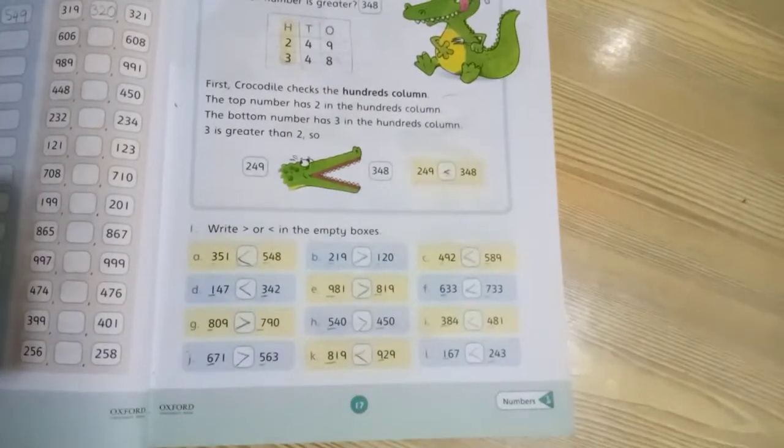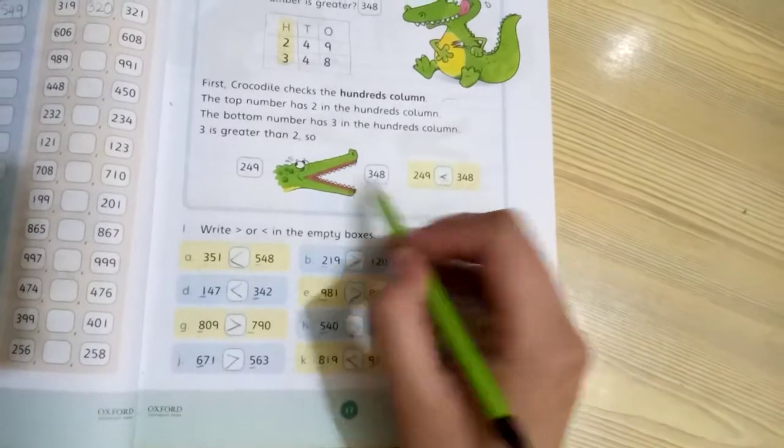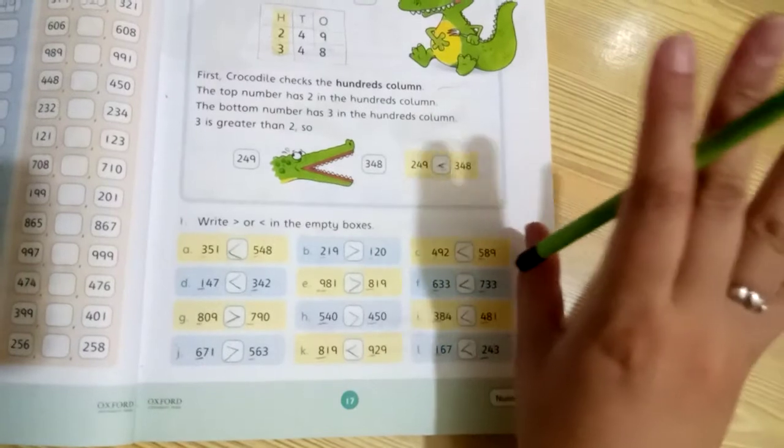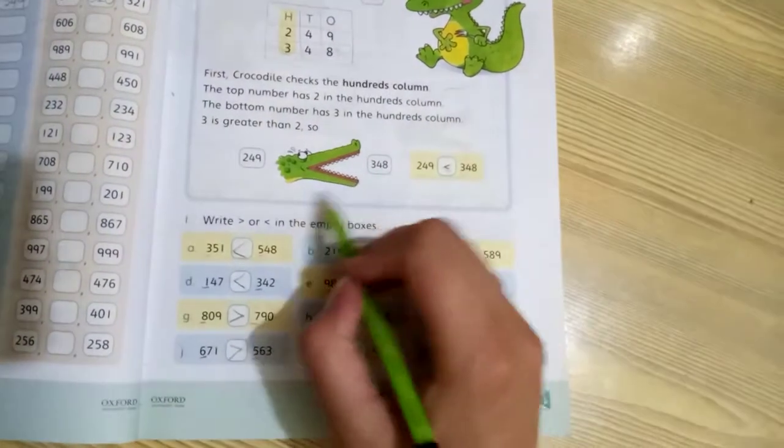So this whole 348 is greater. So the hungry crocodile eats 348. The hungry crocodile's open mouth is towards 348 to eat it.